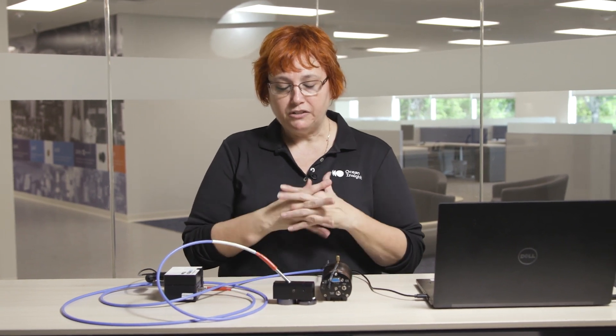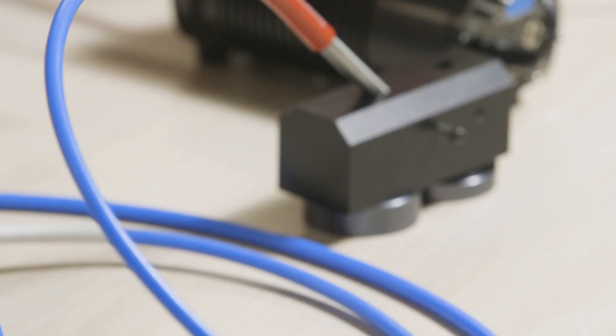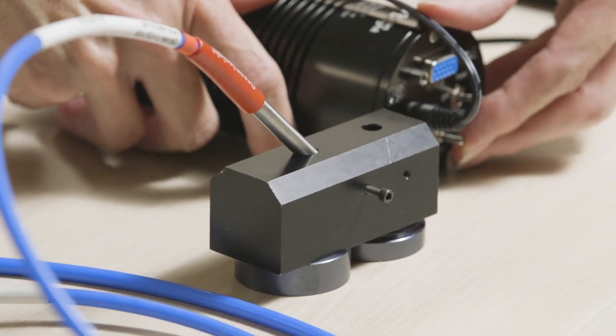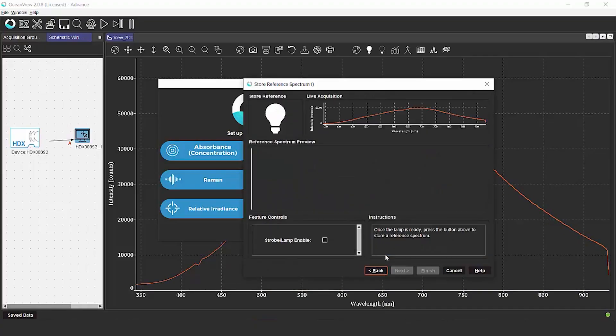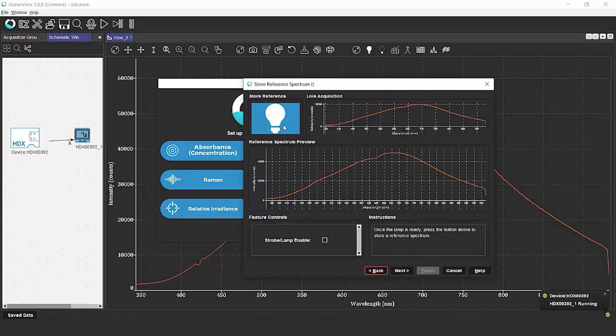We click next to collect our reference and our dark spectra. We're already all set up for the reference spectra here. We just need to make sure to open the shutter on our light source so that we're illuminating the reflectance standard. We're going to click the light bulb to store our reference spectrum. Once that's been stored, we're going to click next.